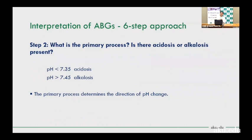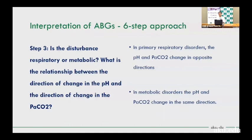Step two: determine the primary process — is it acidosis or alkalosis? pH below 7.35 is acidosis; pH above 7.45 is alkalosis. Step three: determine if the disturbance is respiratory or metabolic. In primary respiratory disorders, pH and PCO2 change in opposite directions. In primary metabolic disorders, pH and PCO2 change in the same direction.